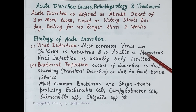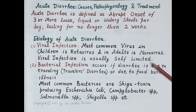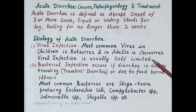Usually acute diarrhea is caused by viral infections. The most common virus in children is rotavirus, and in adults it is norovirus. Viral infection is usually self-limited, meaning it cures on its own, and therefore symptomatic treatment is provided in most cases.